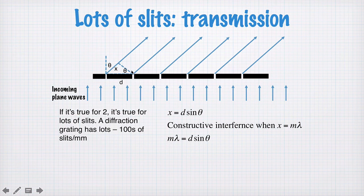If the path length difference between these successive slits is an integer number of wavelengths, then in the far field of this particular direction here we'll have constructive interference, when x, the path length difference, is equal to the integer number of wavelengths. So this condition for constructive interference is true for two slits, three slits, as many slits as you like really.